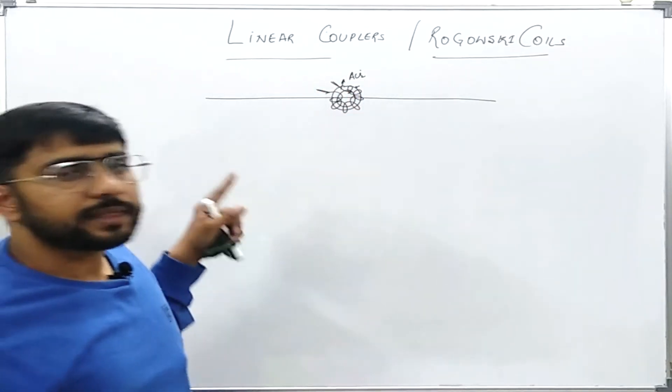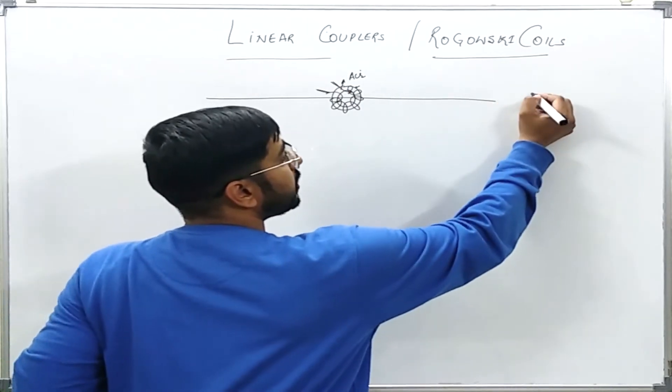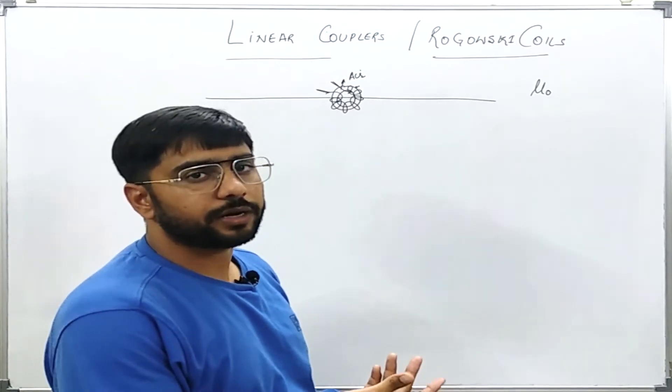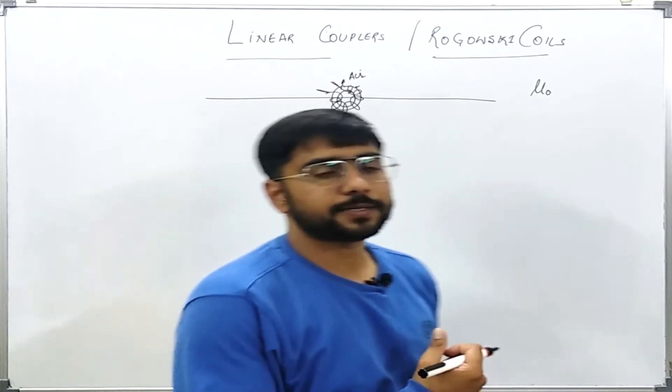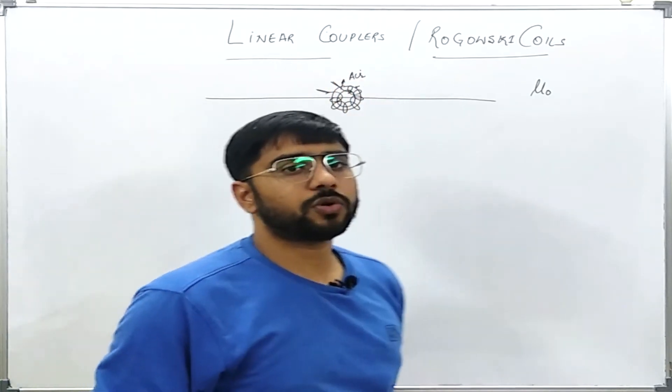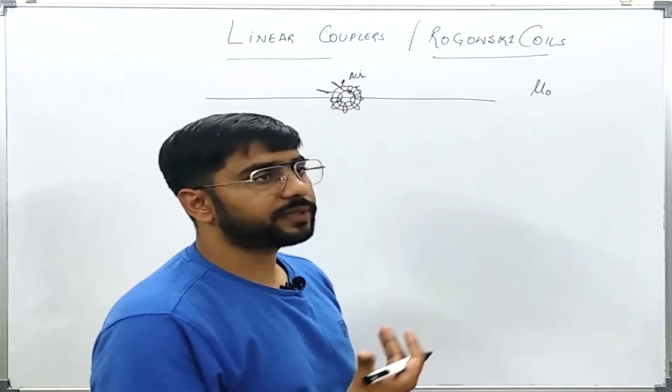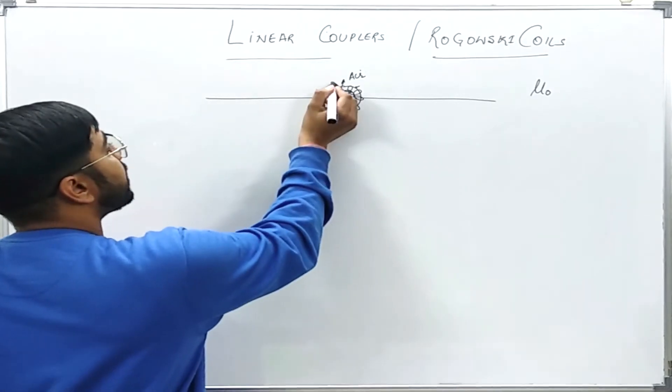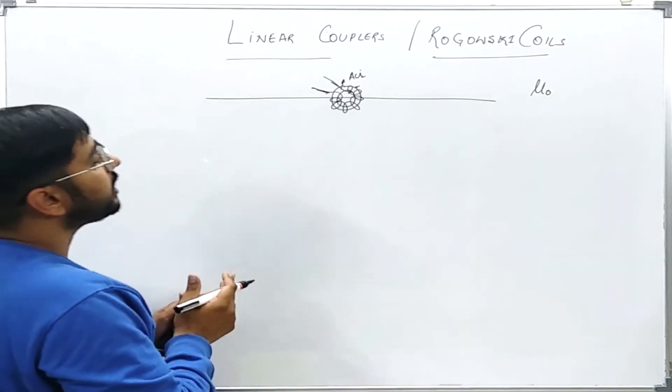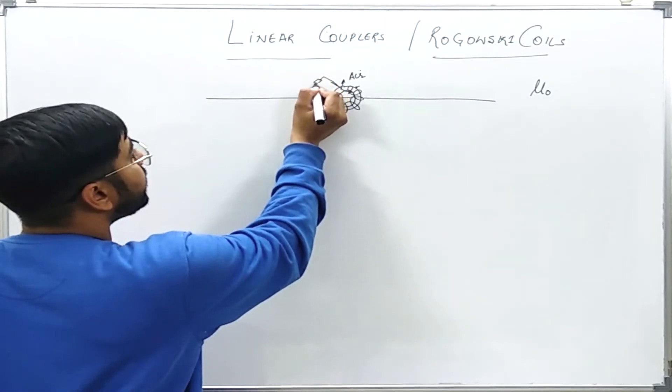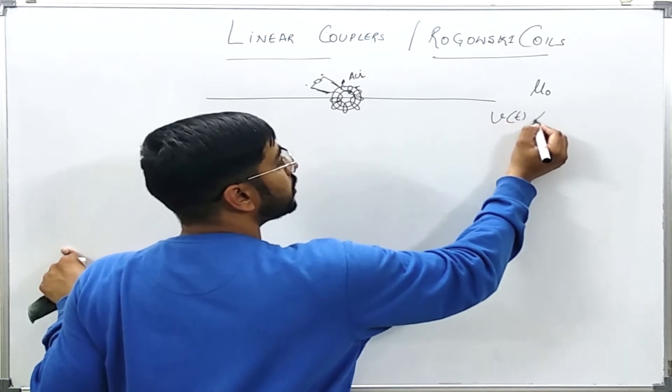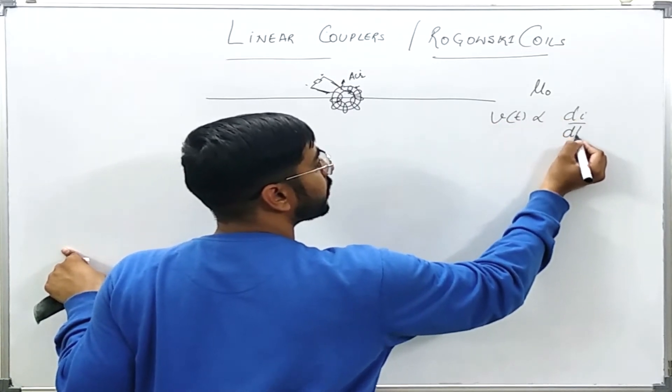You see that for air the permeability is always a constant. There is no phenomenon of saturation in air medium. The issue which we will face because of using air is that the magnetic coupling will not be that much strong as compared to magnetic cores. Because of this the current output on these terminals, the capability of current output will be very reduced. However, we will see that the voltage induced across these terminals is proportional to the rate of change of current in the primary.